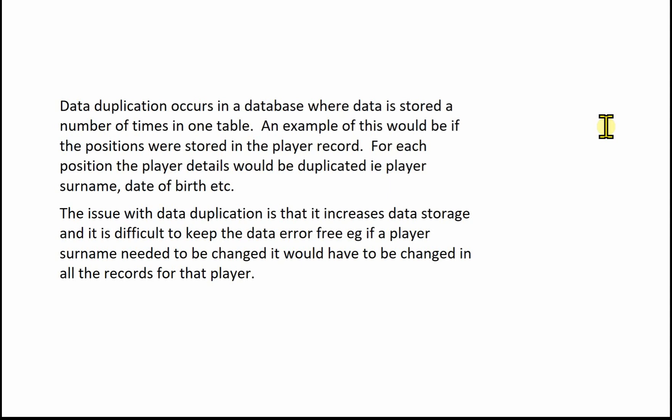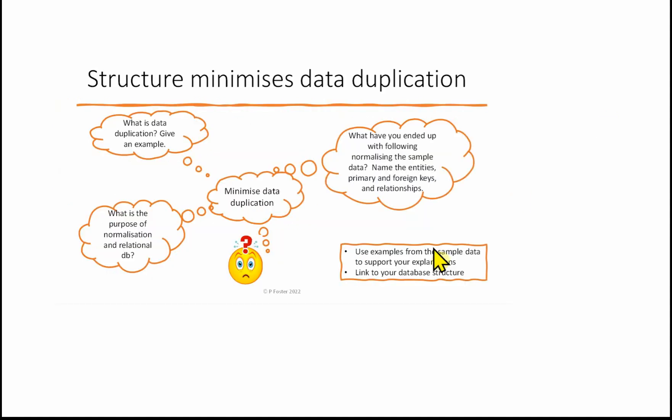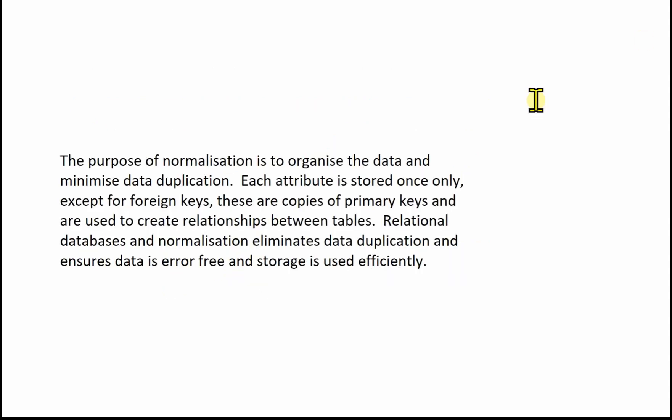The next paragraph covers the purpose of normalisation and relational databases. The purpose of normalisation is to organise data and minimise data duplication. Each attribute is stored only once, except for foreign keys, which are copies of primary keys used to create relationships between tables. Relational databases and normalisation eliminate data duplication, ensure data is error free, and that storage is used efficiently.